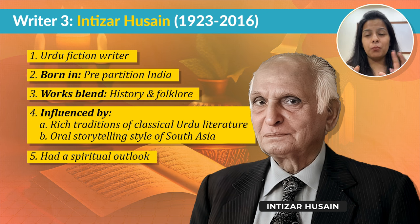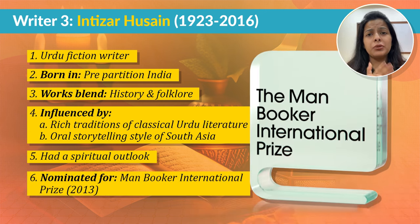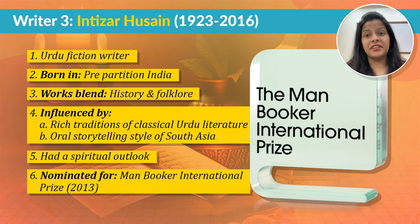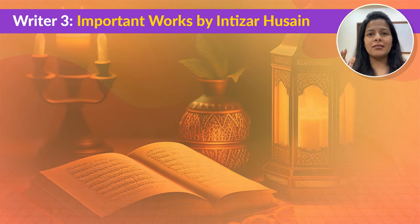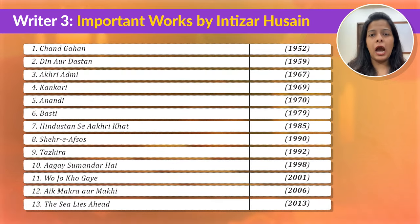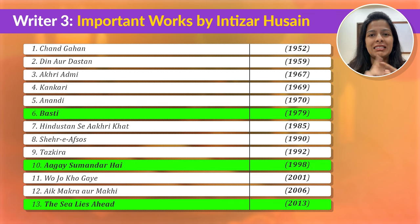If you've read The Alchemist by Paulo Coelho, you'll notice that allegory is used there to convey deeper meaning — and you'll find a similar touch in Intizar Hussain's works. In 2013, his talent was recognized internationally when he was shortlisted for the Man Booker International Prize, putting Pakistani literature in the global spotlight. The three most important works from which in-depth questions are asked in UGC Net are Basti, Aage Samundar Hai, and The Sea Lies Ahead.